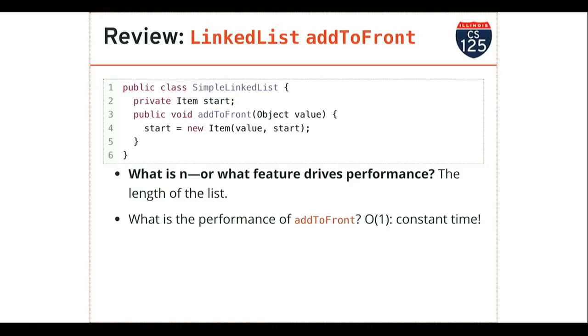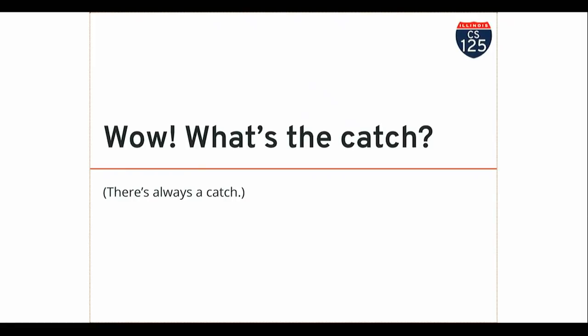This is kind of cool. Remember, array lists — when I add things, in general when I add things to an array list, the runtime was O(N), because I had to move a bunch of stuff around in the array. If it's at the front, I've got to take every element in the array and shift them all over by one, so there's a loop in there. If it's at the end, I've got to create a new array and still copy everything from the original. So the way we had you implement add, it was O(N) for an array list. Here it's O(1). That's pretty cool — there's something good about a linked list.